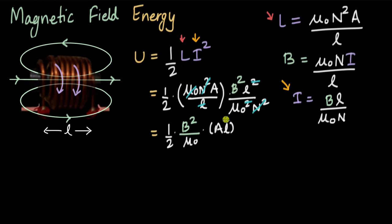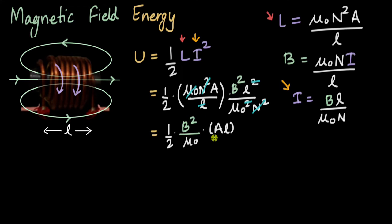After rearranging, we get energy = half times B² divided by μ₀ times A times L. Here, A times L is the volume of the solenoid — the volume where the magnetic field resides. One assumption here is that the magnetic field is zero (or extremely weak) outside the solenoid, and all the magnetic field is just inside.